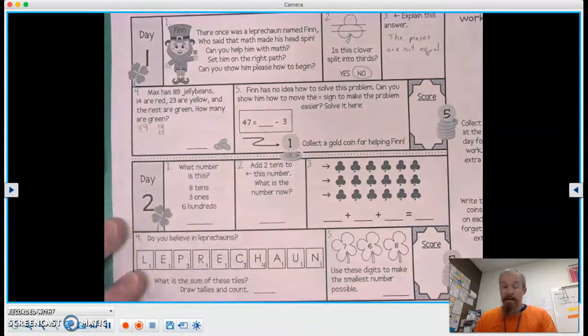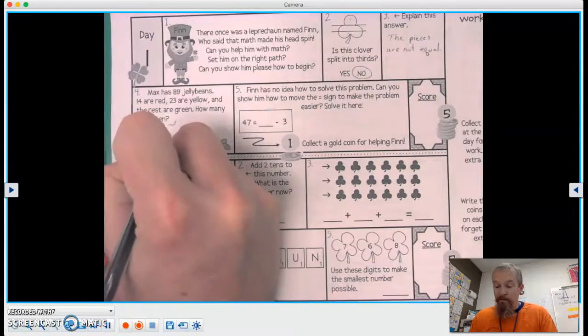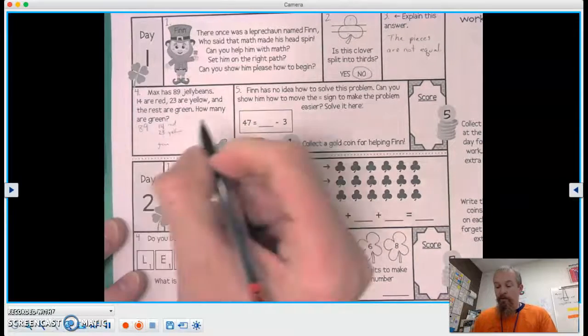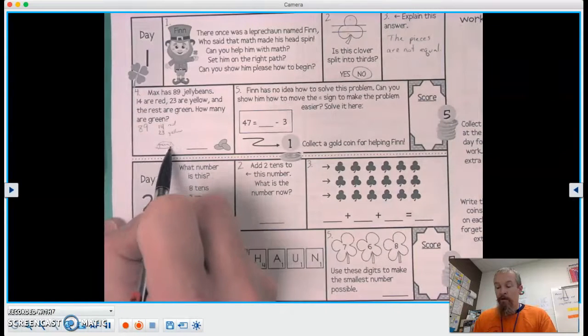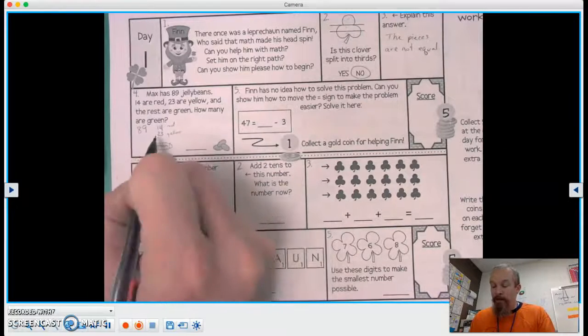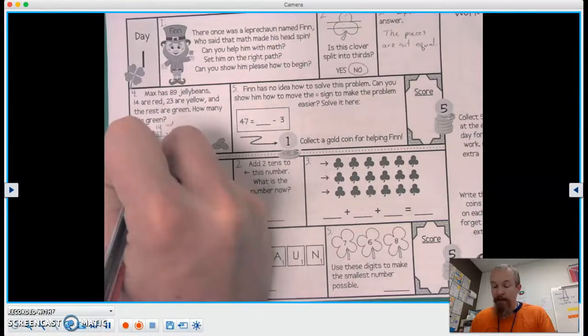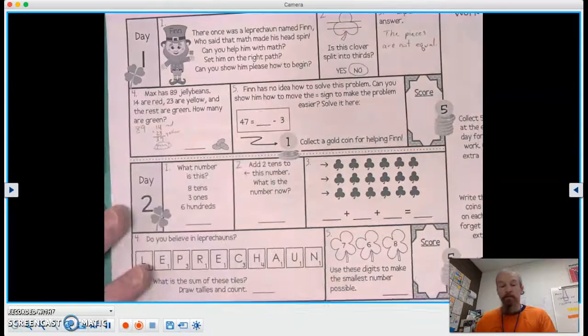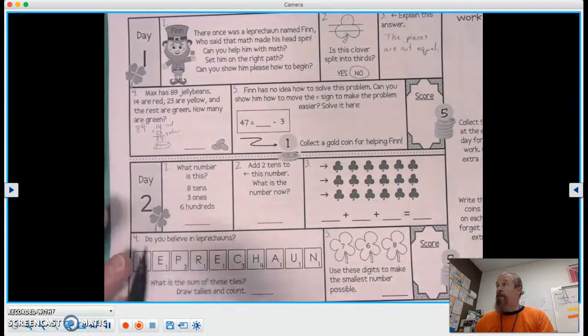So there's three kinds, right? We have red, yellow, and green, but we don't know how many green there are. So if we can figure out how many red and yellow there are, we're going to add those. Four plus three is seven. One, two plus one is three.